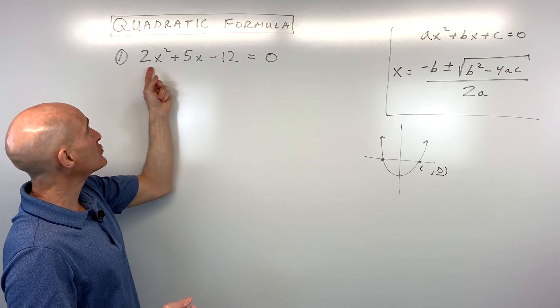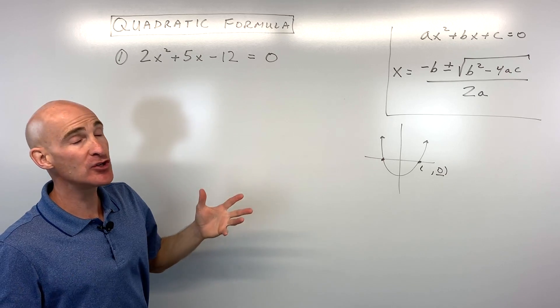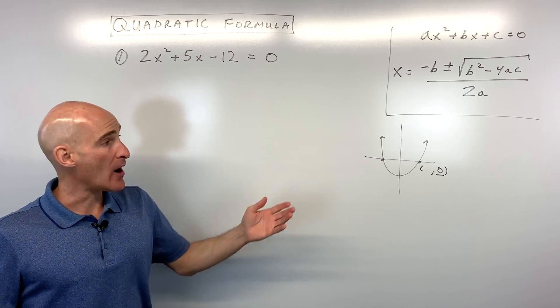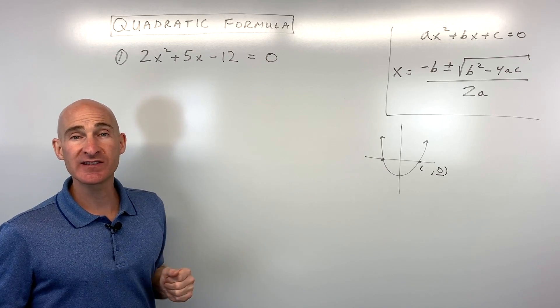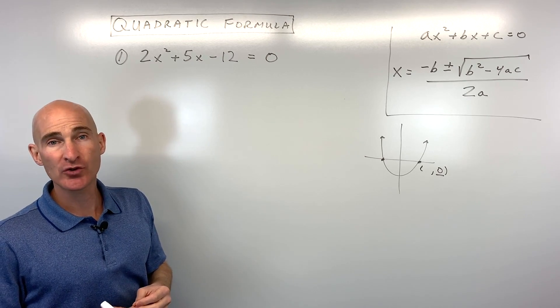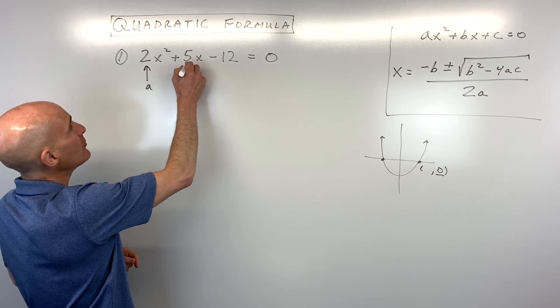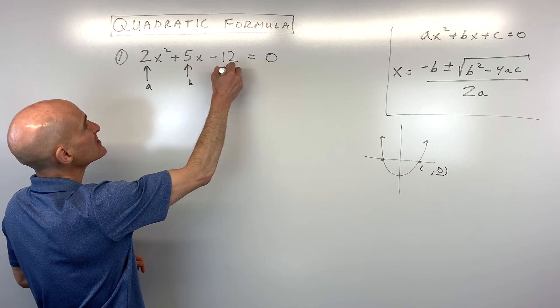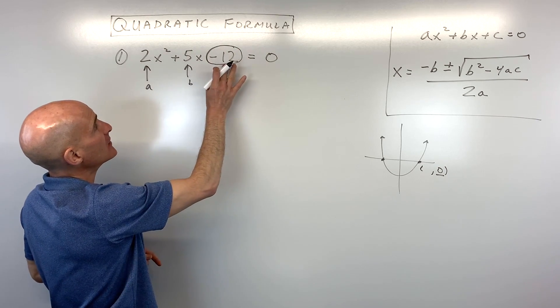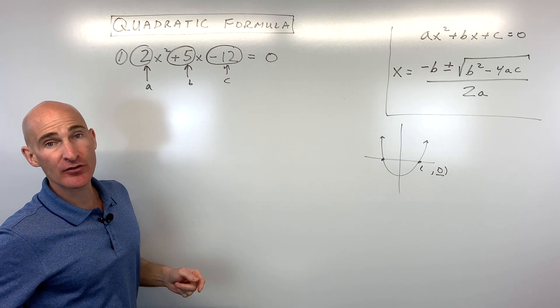The first one, we've got 2x squared plus 5x minus 12 equals zero. So what we're going to do is we could solve this by factoring it or completing the square or graphing it and see where it crosses the x-axis. But sometimes when the numbers are a little bit more difficult, you might want to just jump in and use a quadratic formula. So first thing we want to do is identify our a value, our b value, and our c value, and make sure that you capture the sign, whether it's positive or negative.